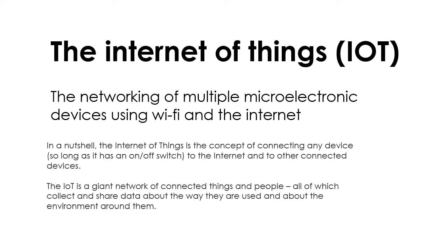Hi, Year 13. This is a revision video about something called the Internet of Things — it could be something that comes up in paper two. It's a very easy and simple thing to understand, sometimes abbreviated to IoT. It sounds like a made-up term, but basically what it means is when lots of devices, anything electronic, are all connected or networked together over the Internet.